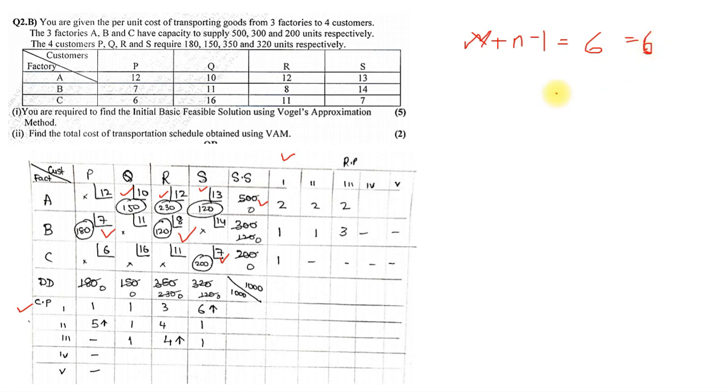We can find the total cost. The total cost is nothing but 180 into 7 plus 150 into 10 plus 230 into 12 plus 120 into 13 plus 120 into 8 plus 200 into 7. The total comes to 9400 rupees. That's our total cost on this particular sum. Initial feasible solution, the total cost is 9400 under VAM method.